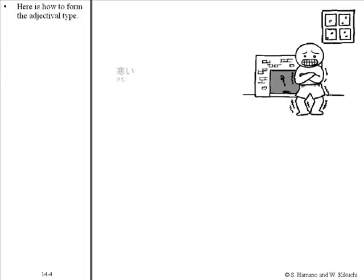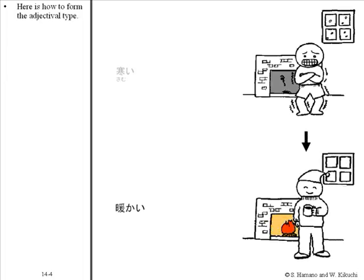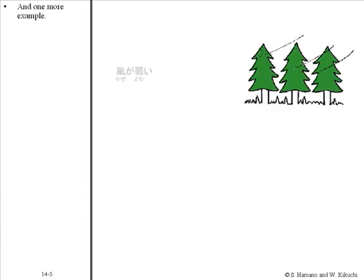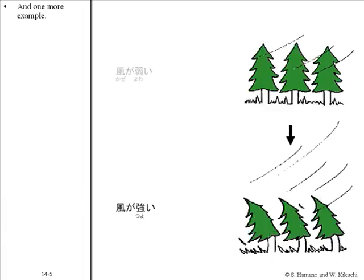Here is how to form the adjectival type. Pay attention to the end result — turn the result to a ku-form. Now add the verb narimashita. And one more example: 風が強くなりました.